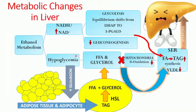Because there is hypoglycemia and no gluconeogenesis, glucagon hormone levels rise and glucagon acts on adipocytes, activating hormone-sensitive lipase. Since adipocytes store triacylglycerol, triacylglycerol will be catalyzed into free fatty acids and glycerol by hormone-sensitive lipase.